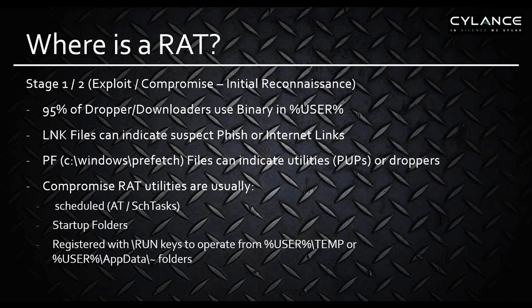Stage 1 and 2 are generally chatty as far as file system artifacts, network artifacts, and so on — because they're most of the time going to come in through a user space profile. We'll mostly find related binaries or scripts dropped in a user space directory like temp, app data, or temporary internet files under a user profile. 95% of the droppers and downloaders we find in our investigations actually drop into user space — mostly user space temp.